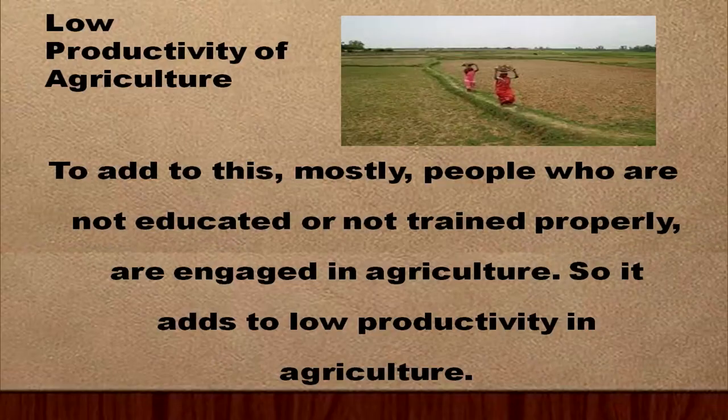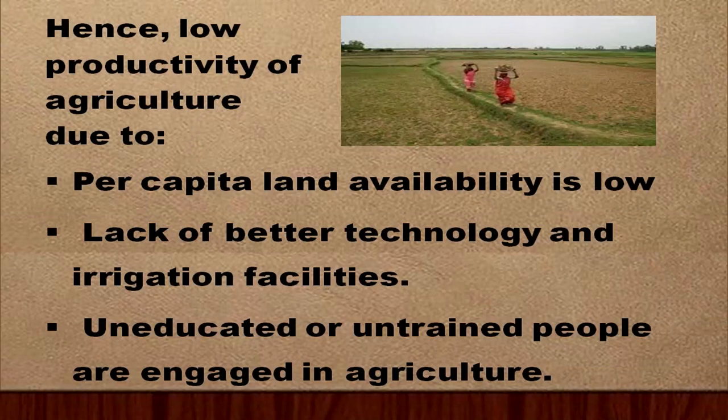Yet another reason for low productivity is that people who are not educated or not properly trained are engaged in agriculture, which also leads to low productivity in this sector. To sum up: there is low productivity of agriculture due to low working capital and land availability, lack of better technology and irrigation facilities, and uneducated or untrained people being engaged in agriculture.